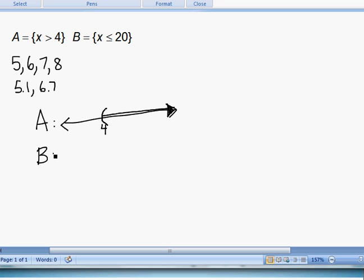How about B? B is the set. Let's see if I can do a little better. B is the set of all numbers that are less than or equal to 20. So 20 is maybe down here, and we're going to take everything including 20, but then everything less than or equal to it. So it's all these values going infinitely in that direction.